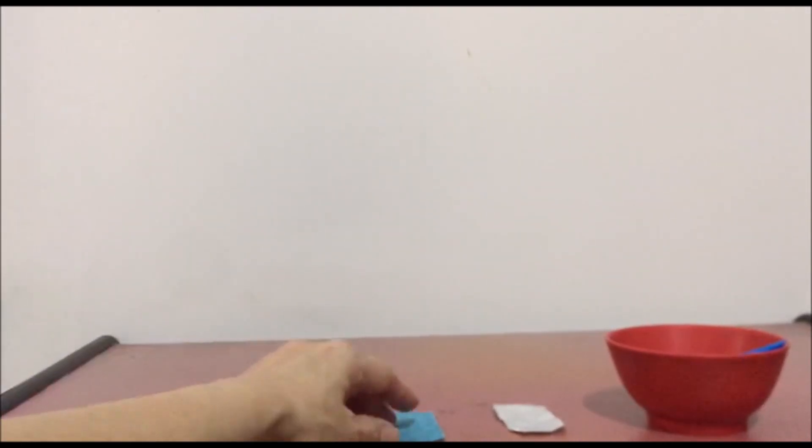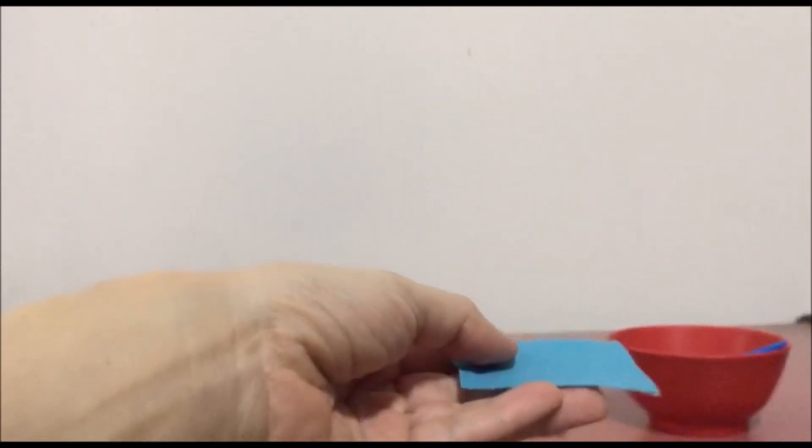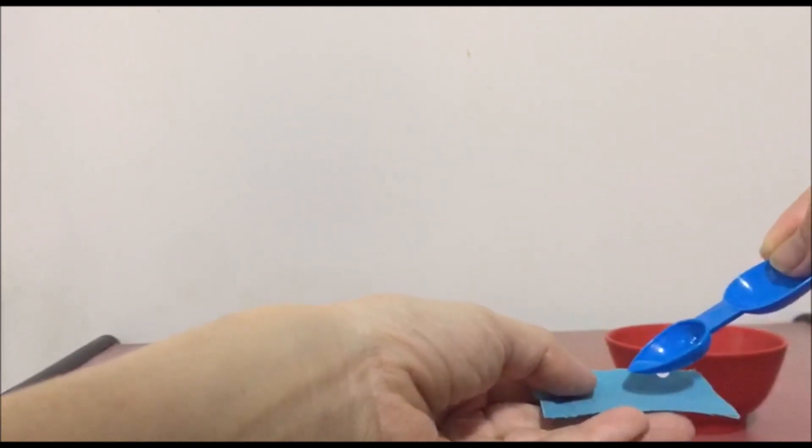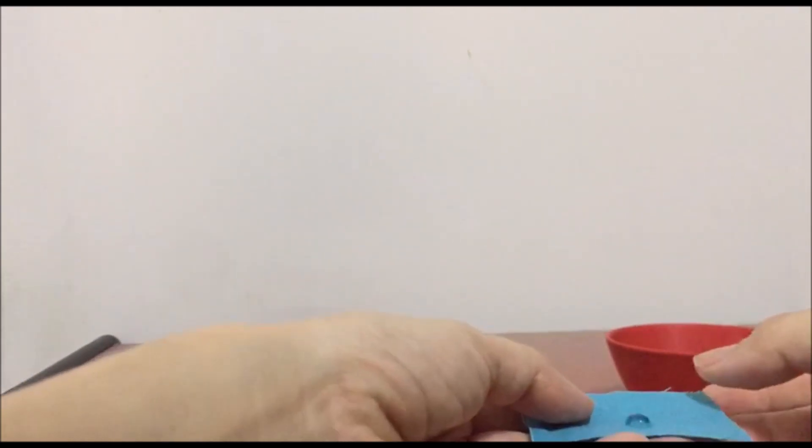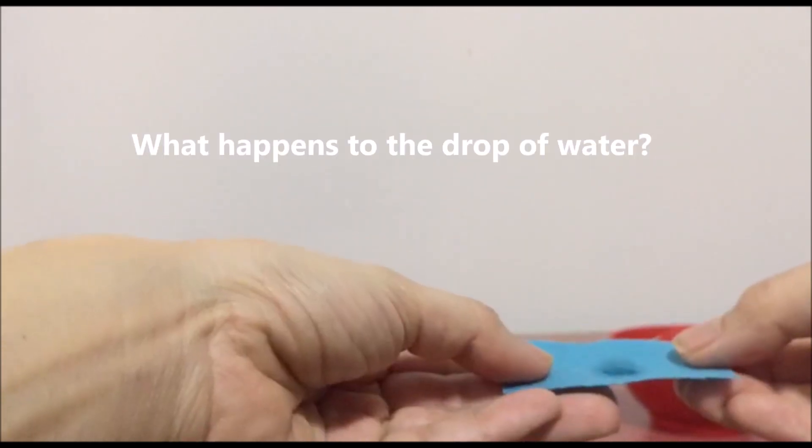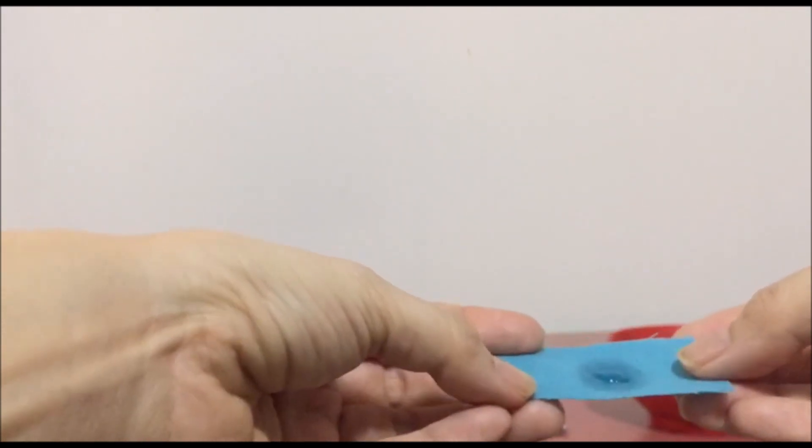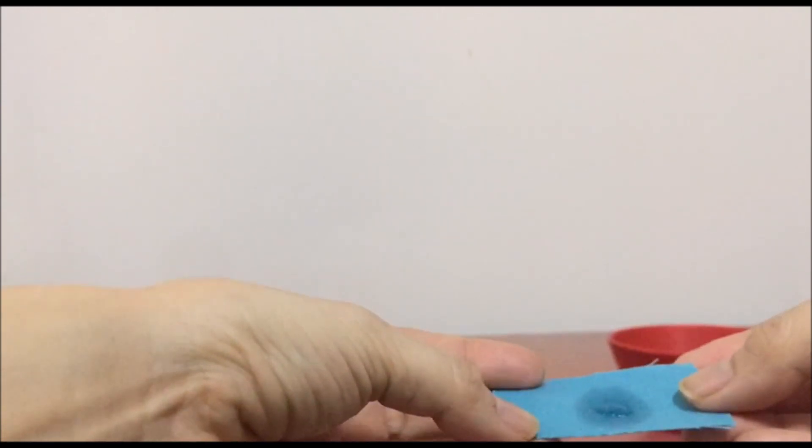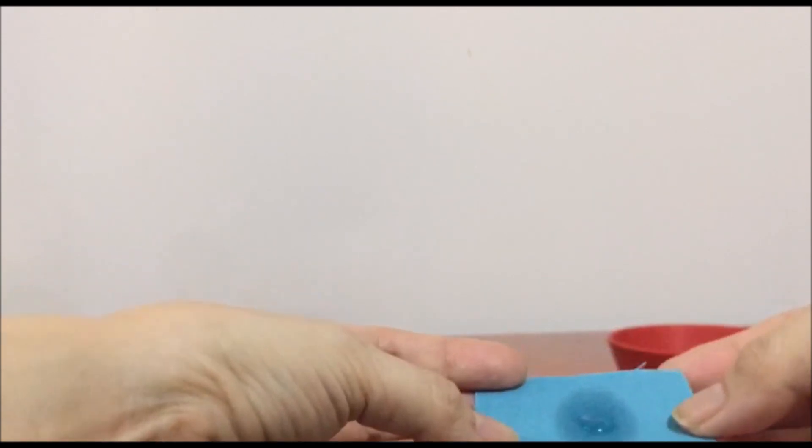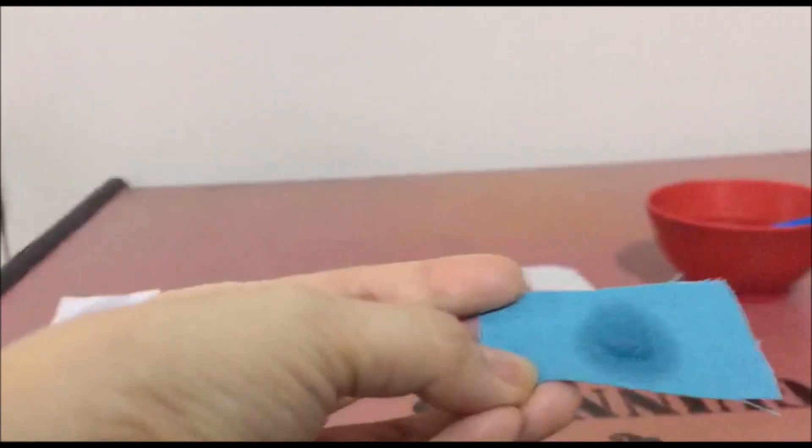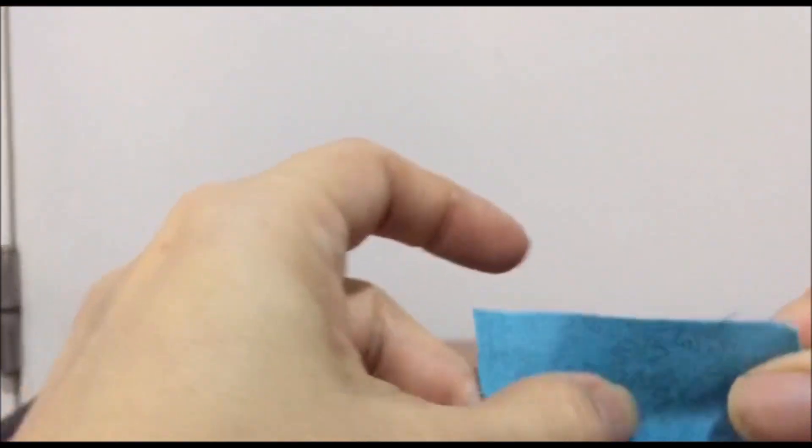Let's try the fabric. This is a cotton fabric. What happens to the drop of water? Can you see that it is spreading? Let's look at the other side. It is wet on the other side.